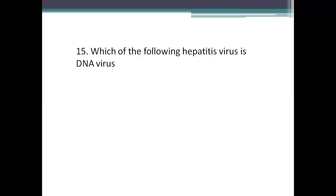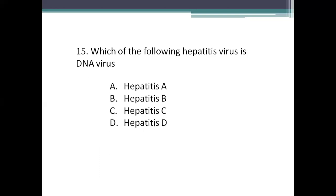Next question: which of the following hepatitis viruses is a DNA virus? Option A: hepatitis A. Option B: hepatitis B. Option C: hepatitis C. Option D: hepatitis D. The right answer is Option B, hepatitis B. Hepatitis A, C, D, and E are RNA viruses. Hepatitis B virus is the only DNA virus among the five hepatitis viruses that cause viral hepatitis.